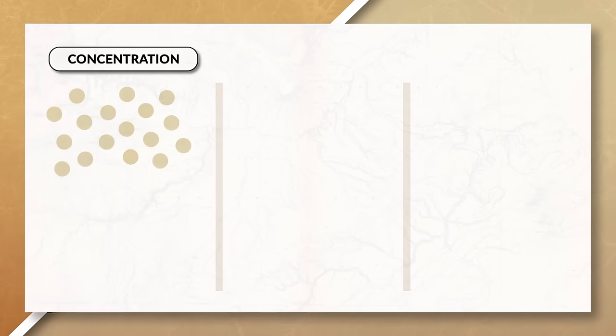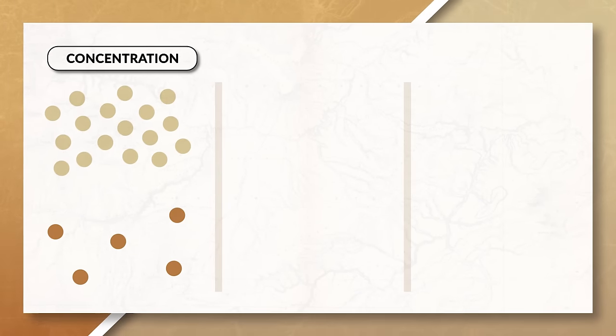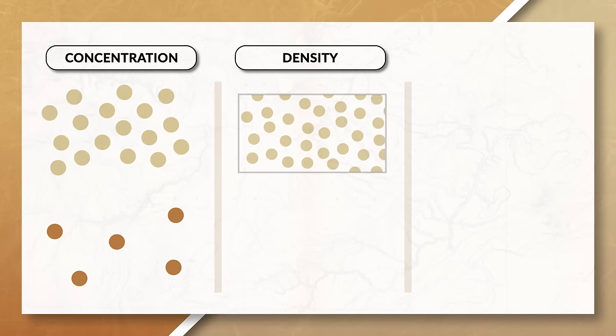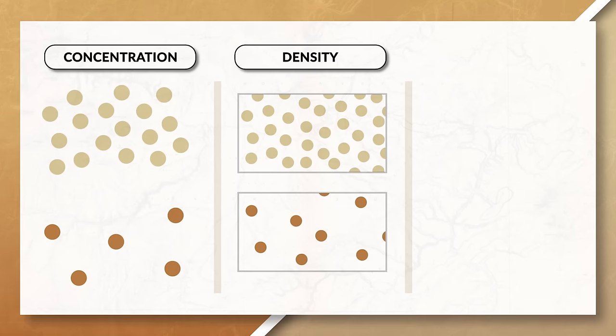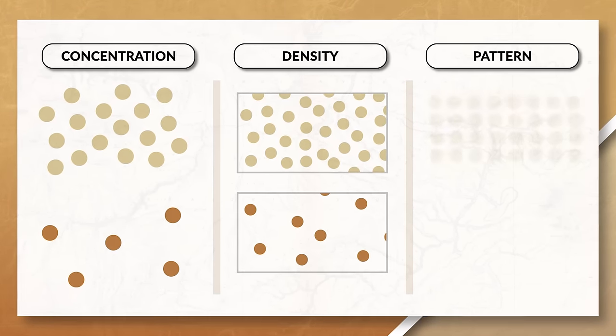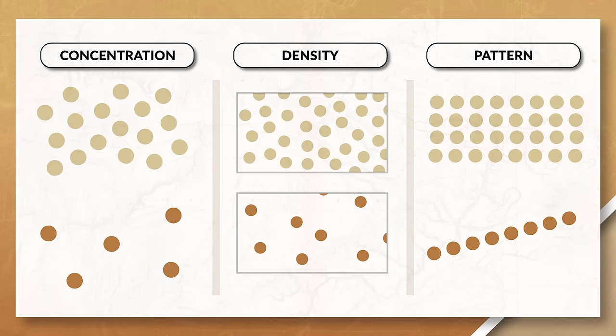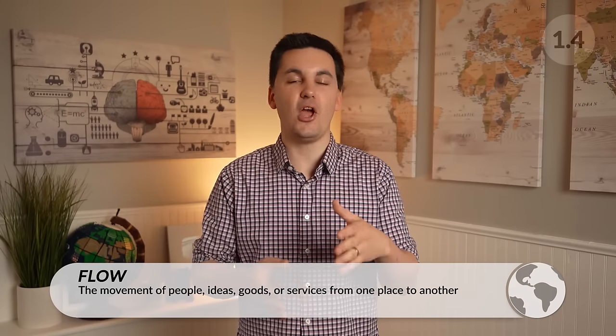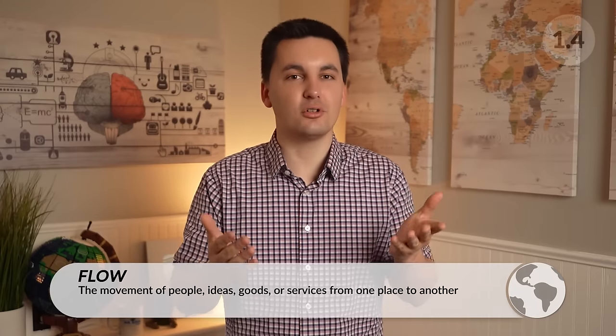Concentration looks at how things are spread out — objects may be clustered together or dispersed. Density looks at the amount of objects or people in an area; urban areas are often more densely populated than rural areas. Pattern is the arrangement of things in an area, such as a grid formation or linear pattern. When we observe spatial distributions, we can gain a better understanding of the flow, use, purpose, and culture of that place. For example, how the desks in a classroom are arranged tells you something about how the classroom will be used.